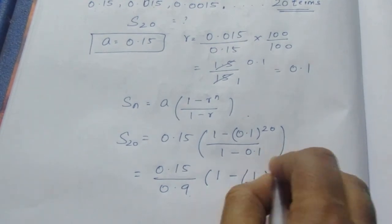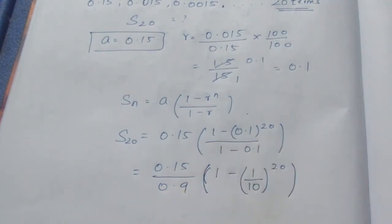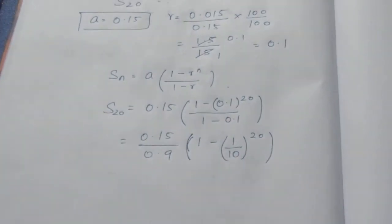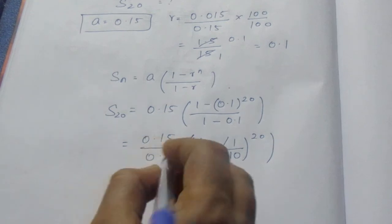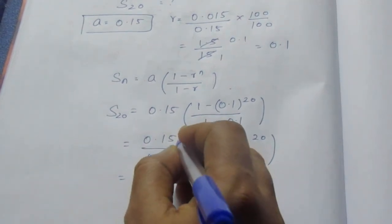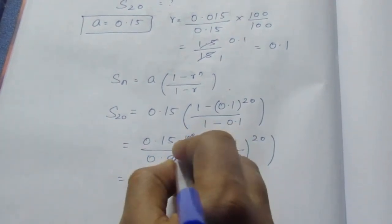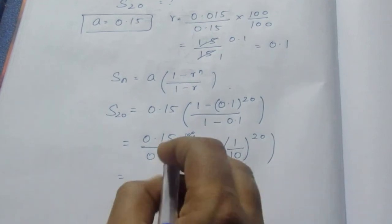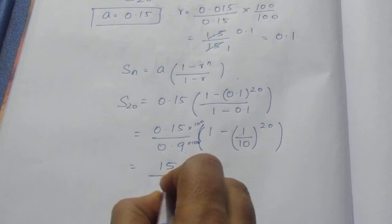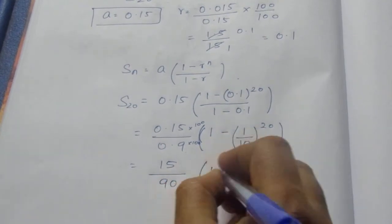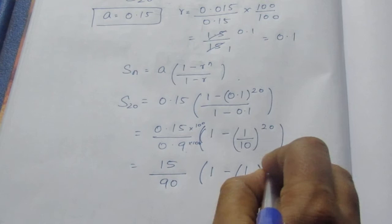Now multiplying and dividing by 100 on both sides, it becomes 15 by 90. Here 1 minus 1 by 10, the whole to the power 20.